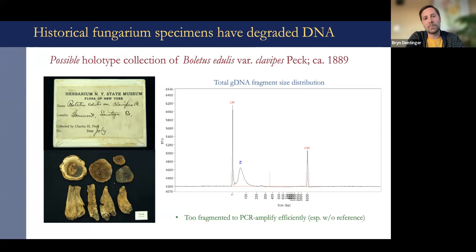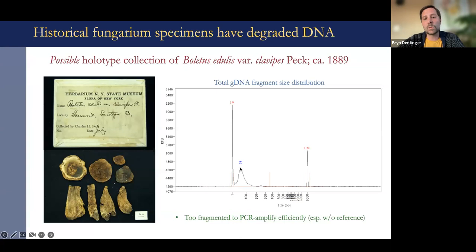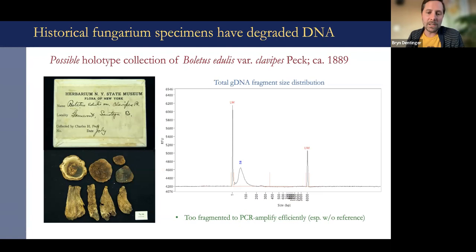The reason you can't amplify genes like ITS from this old material is that the DNA is broken up into such small pieces — much smaller than the region you would try to amplify — so the amplification fails. As an example, this plot shows the frequency of fragment sizes from a DNA extraction from the putative holotype of Boletus edulis var. clavipes Peck — unfortunately Peck didn't designate a holotype, so it's hard to know if this is the correct collection. The average fragment size is 58 base pairs. This is essentially ancient DNA, like preserved woolly mammoth DNA. This is a big technical challenge.